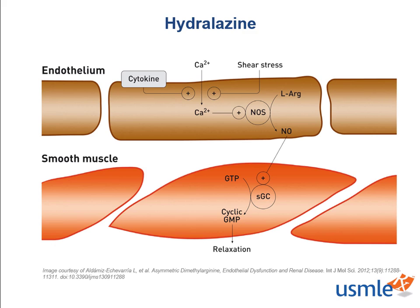So how does it work? Here's our diagram showing endothelial and smooth muscle cells of a vessel. Hydralazine increases cyclic GMP. Cyclic GMP will bind and liberate protein kinase G inside of the smooth muscle cell. This phosphorylates IP3, which decreases calcium influx from the sarcoplasmic reticulum of muscle cells. Less calcium means less contraction, and less vascular smooth muscle contraction means less constriction, and therefore vasodilation.